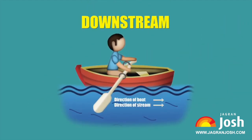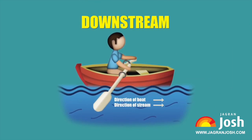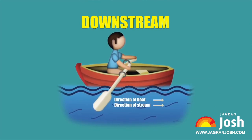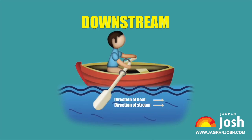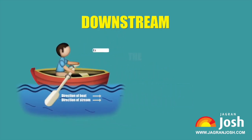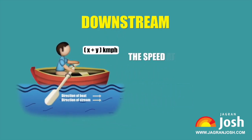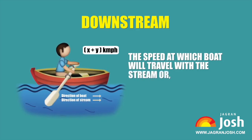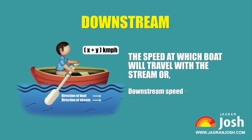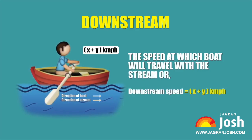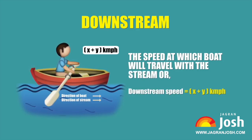Downstream: If the speed of a boat in still water is x km per hour and the speed of the stream is y km per hour, then the speed at which the boat will travel with the stream — or downstream speed — is equal to x + y km per hour.